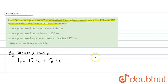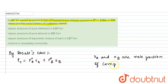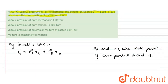And x_A and x_B are the mole fractions of component A and B respectively. Now, let us say that component A is methanol and component B is ethanol.